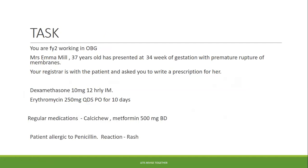The first task: you are an FY2 working in obstetrics and gynaecology. Mrs Emma Mill, a 37-year-old, has presented at 34 weeks of gestation with premature rupture of membranes. Your registrar asks you to write a prescription for dexamethasone 10mg, erythromycin 250mg, and her regular medications.